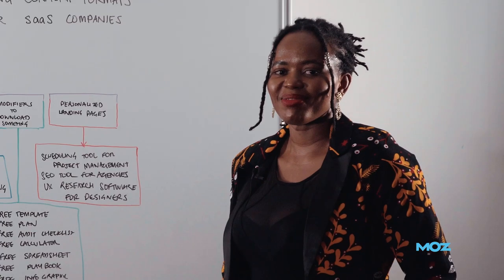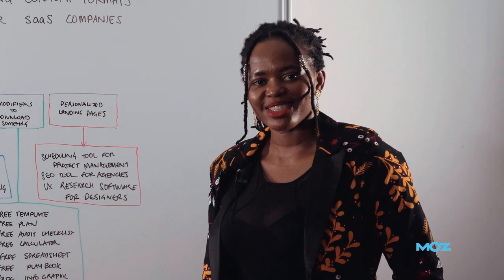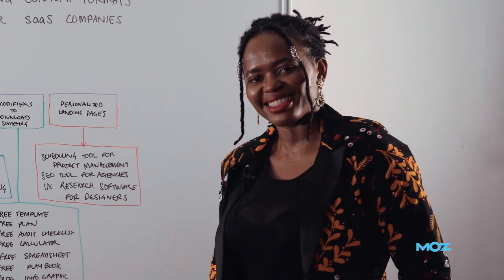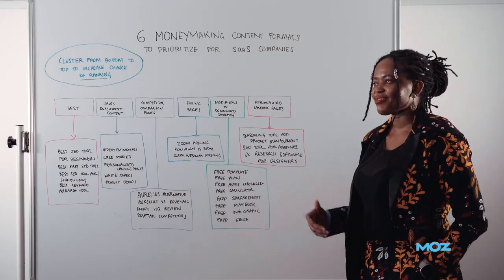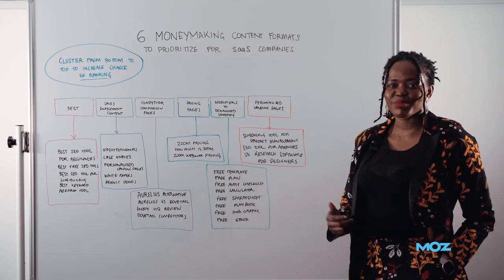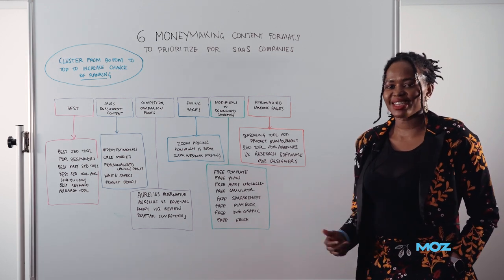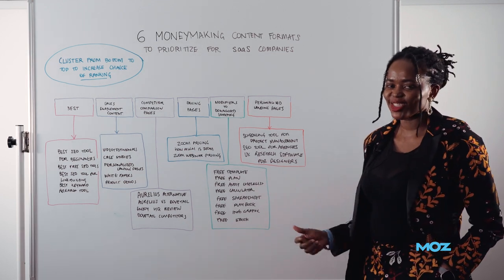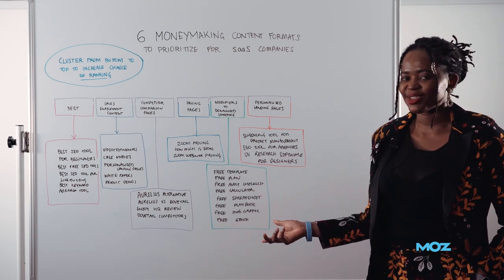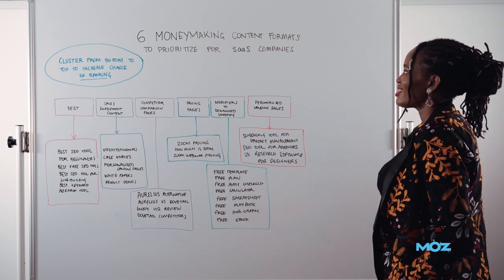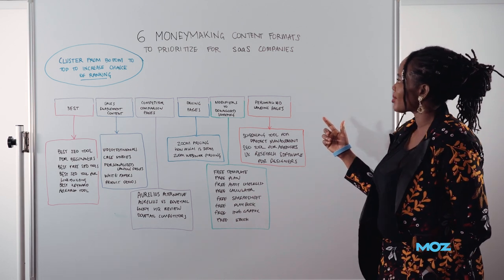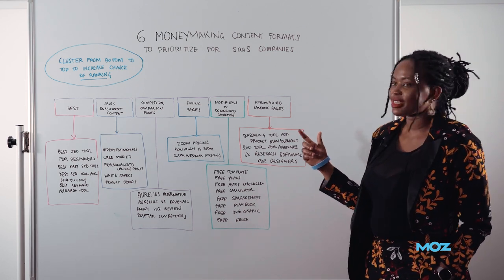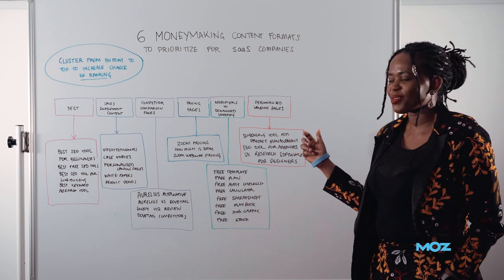My name is Chima Medje and I am a SaaS content strategist at zenithcopy.com. I write long-form content and I also build topic clusters as a form of content strategy for SaaS companies. Today I'm talking to you about six money-making content formats to prioritize for SaaS companies.